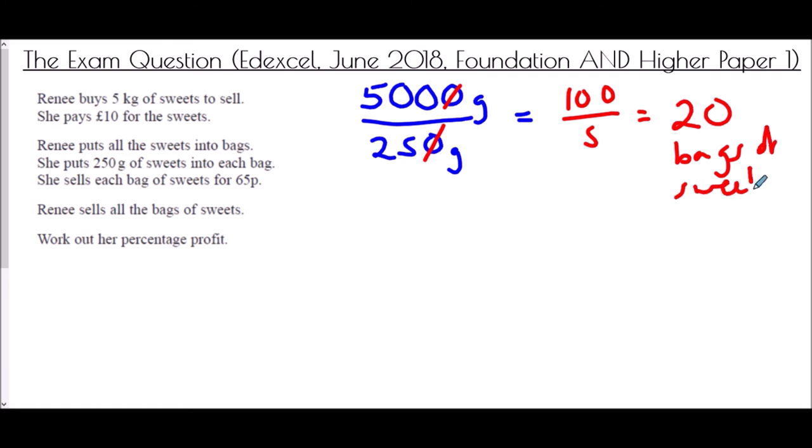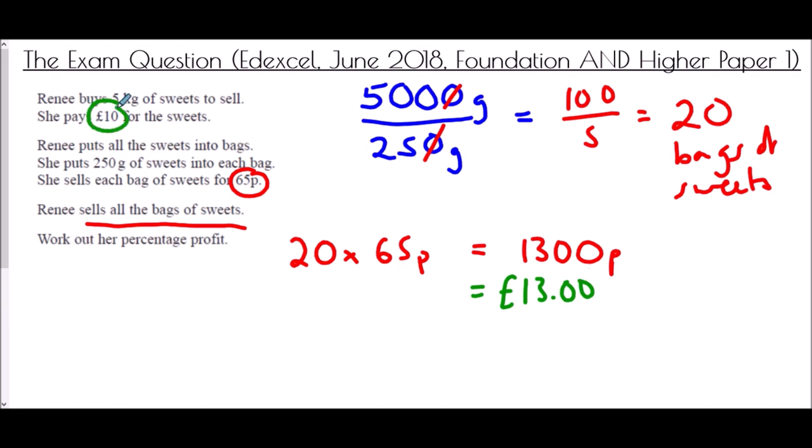Now if she made 20 bags of sweets we are told she sells all of them. So she sold all 20 bags for 65 pence each. And so in this case we now need to know what 20 times 65 pence is. And so the quick way to do this well 2 times 65 is 130. So 20 times 65 is 1300. If we have a look at that that's in pence. So if I want to turn that into pounds, if I divide by 100 it is 13 pounds. So she has made 13 pounds. She spent in the beginning 10 pounds. So what profit has she made? Well her profit would therefore be 3 pounds.